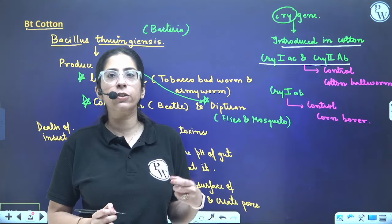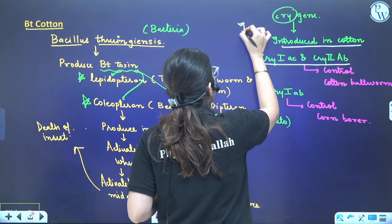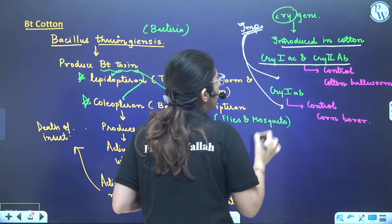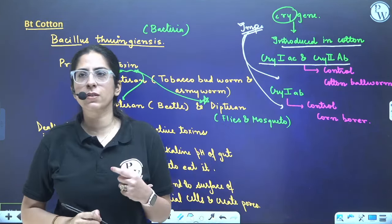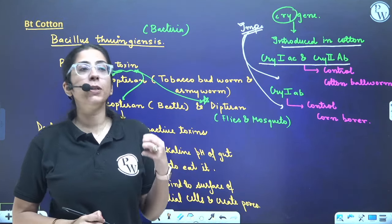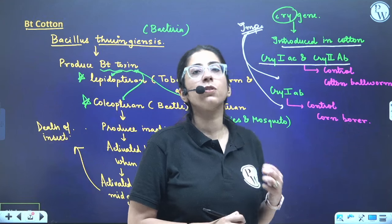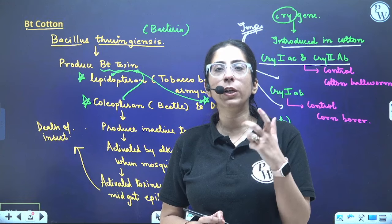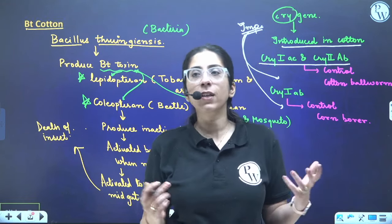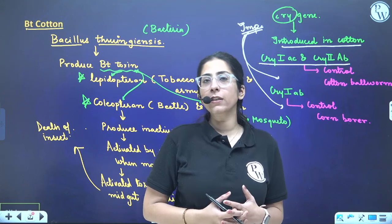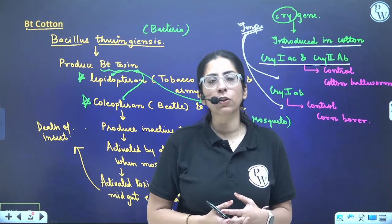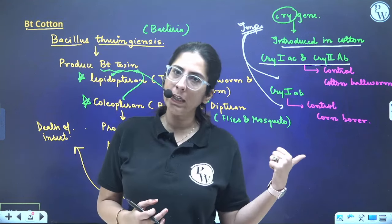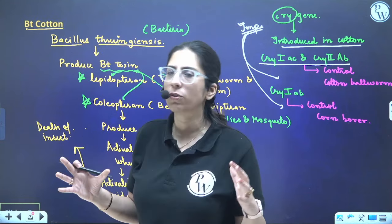This is very important — if you are appearing for NEET, this question has been asked many times. All data is from your NCERT. Today, not only BT cotton — we have successfully introduced the cry gene into soybean, tomato, potato, and beans as well, thanks to biotechnology, specifically recombinant DNA technology.